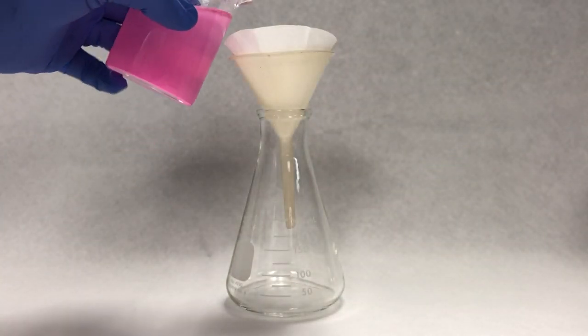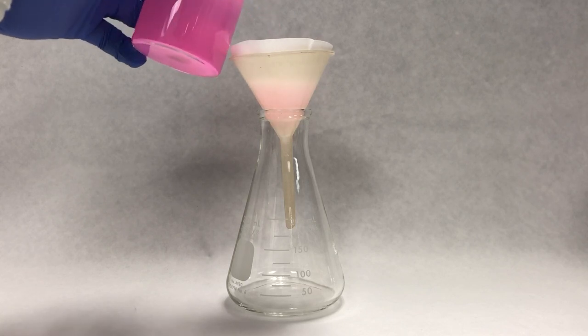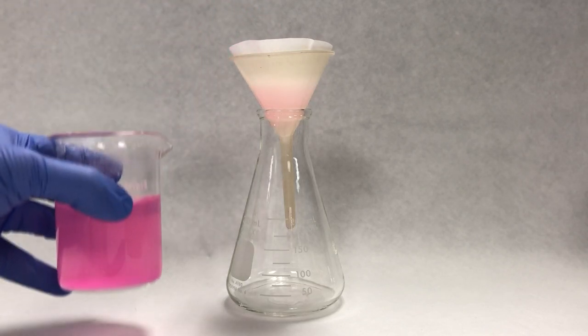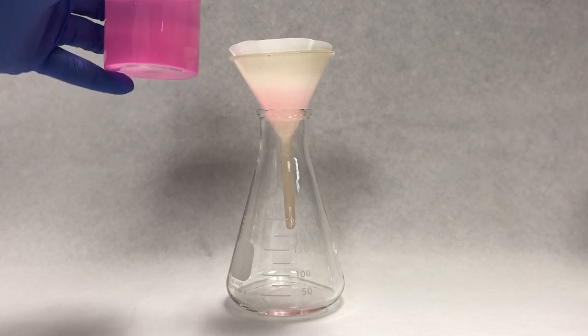Place the funnel and the filter paper into the top of the flask and start pouring in your solution. Make sure to do this slowly as it takes a while for the solution to drain through the filter paper.